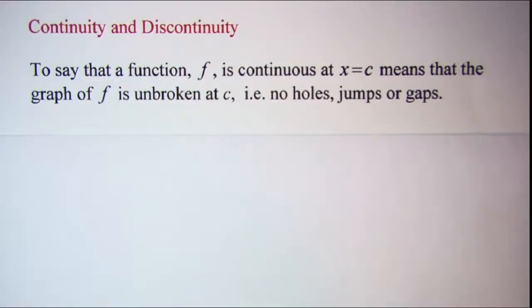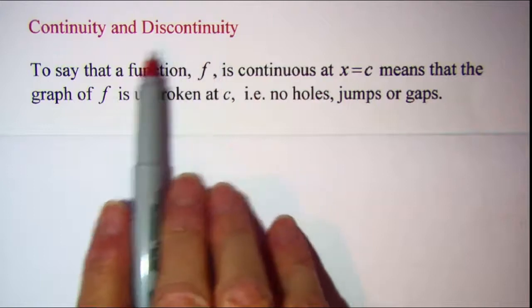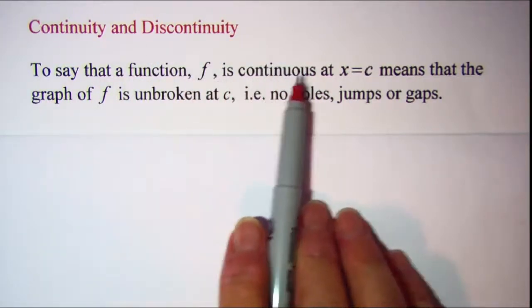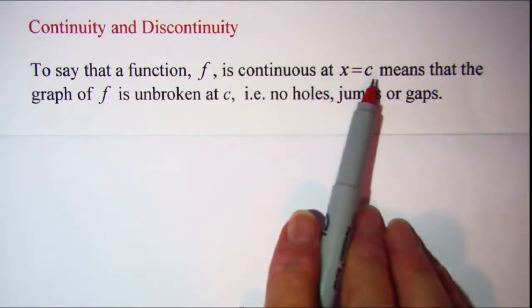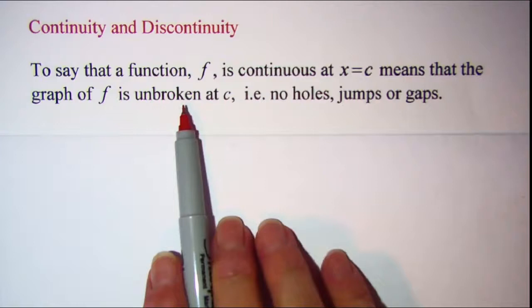In this video we'll be looking at continuity and discontinuity of functions. To say that a function f is continuous at some value x equals c means that the graph of f is unbroken at c.